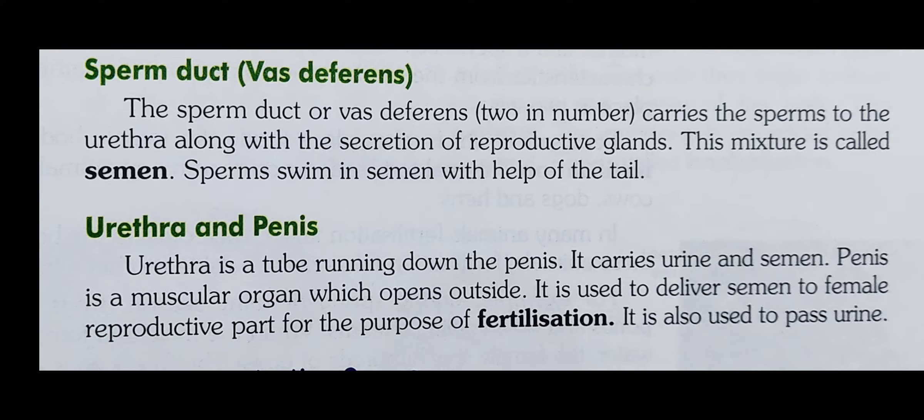Next is the urethra. Urethra is a tube running down the penis. It carries urine and semen. The penis is a muscular organ which opens outside and is used to deliver semen.